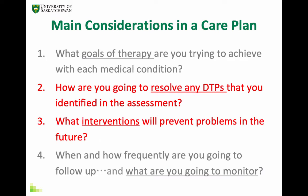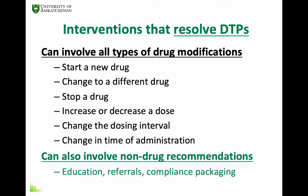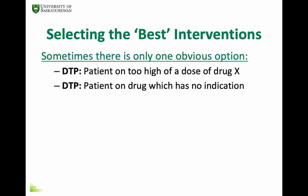Now let's talk about the second and third considerations together — coming up with interventions to resolve any drug therapy problems found during the assessment, along with recommendations to prevent any problems in the future. When selecting the best option to resolve or prevent a problem, sometimes you're lucky and there is only one reasonable option — for example, if the dose of a drug was too high, the only rational option is to lower the dose, or if the patient was on a drug that is no longer indicated, you should clearly recommend stopping it.